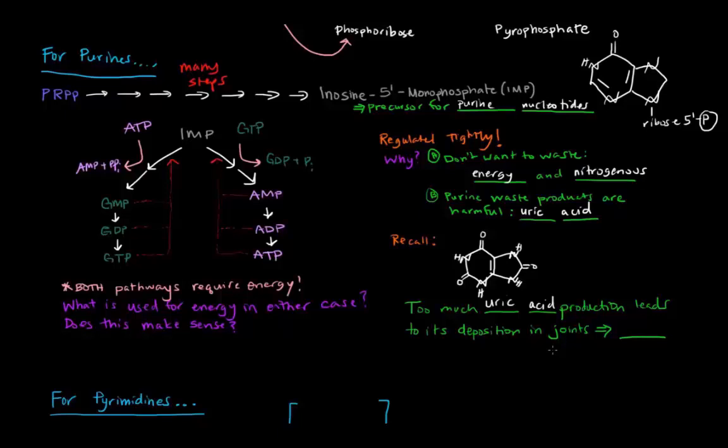Now uric acid is not cool. Too much uric acid production can lead to its deposition in joints. So in your, like say, your elbow joint, your knee joint, or even like your toe joints. Just joints all over your body. And that condition is called gout. You may have heard of it. And that is very painful. So it makes sense that you would want to regulate this process tightly so that you don't have too many of this waste products. Especially if it's going to accumulate in your joints and cause you a great deal of pain. So that's a sort of general overview about what goes on with purine nucleotide biosynthesis.